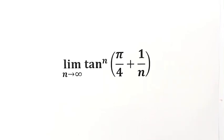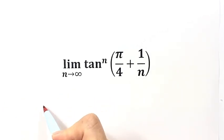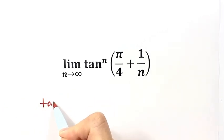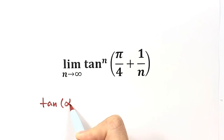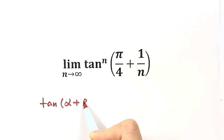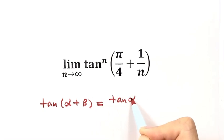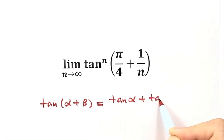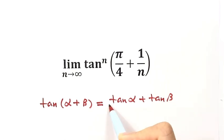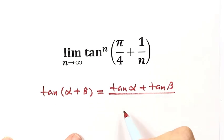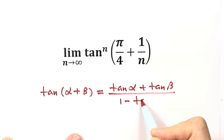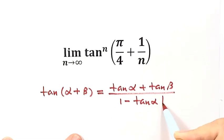In this video, we are going to solve a limit problem from Chinese college math computation. First, let's put down the trig identity that we are going to use: tangent of (alpha plus beta) equals tangent alpha plus tangent beta, all divided by 1 minus tangent alpha times tangent beta.